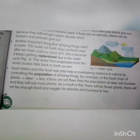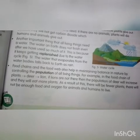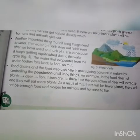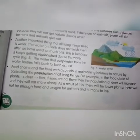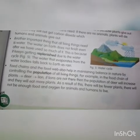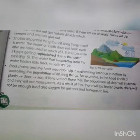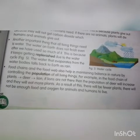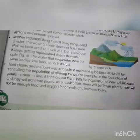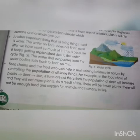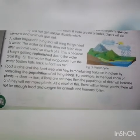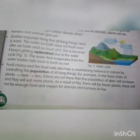For example, in the food chain of plants, deer, and lion — if lions are not there, then the population of deer will increase and they will eat more plants. As a result, there will be fewer plants, and there will not be enough food and oxygen for animals and humans.